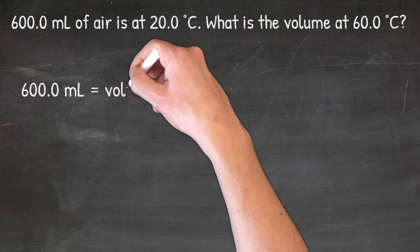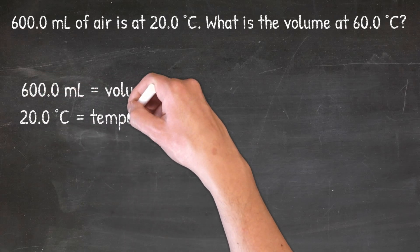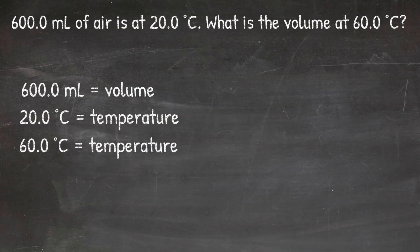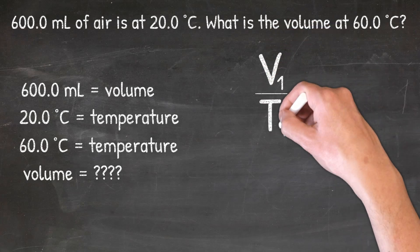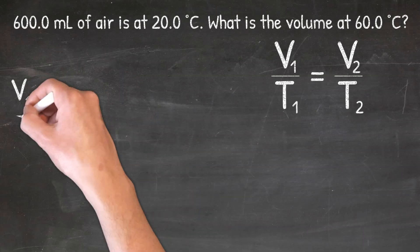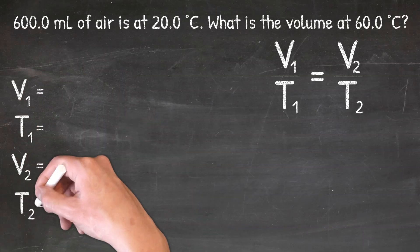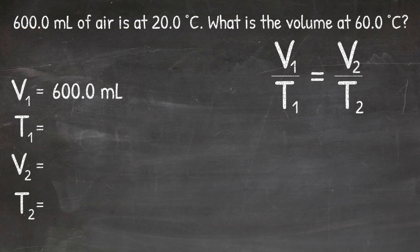When I read this problem, I first see 600 milliliters, and I know that 600 milliliters is going to represent the volume, because it is using the unit milliliters. I then see 20 degrees Celsius and 60 degrees Celsius, and that is going to represent temperature, because degrees Celsius is a unit for temperature. The problem is then asking me to solve for the volume. So because I'm given volume and temperature in this problem, I need to pick the gas law formula that has volume and temperature in it, and that would be Charles' law, which is V1 over T1 equals V2 over T2. I can plug in 600 for V1, and I'll plug 20 degrees Celsius in for T1.